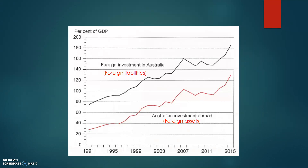You'll notice straight away that the amount of foreign liabilities is above the amount of foreign assets, and this corresponds to what we know about Australia's savings and investment gap. National savings is not enough to sustain our high level of investment, and therefore we require an inflow of foreign capital into Australia — which we can see in the fact that foreign liabilities is larger than foreign assets.